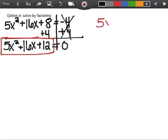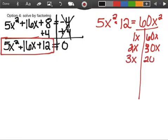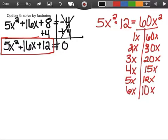So now, 5x squared times the last term, which is 12, I get 60x squared. Man, that's a big number. I'm going to have to make a t-chart for it. I have 1x times 60x, 2x times 30x, 3x times 20x, 4x times 15x, 5x times 12x, and lastly, 6x times 10x. There are all my factors of 60.